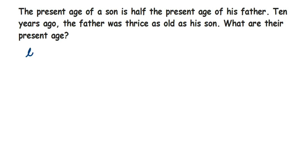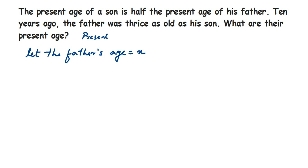Let the father's age be x. This is the present situation. The son's age is half of the present age of his father, so son's age = x/2. So the two present ages are: father's age = x, and son's age = x/2.